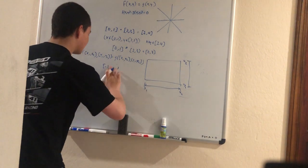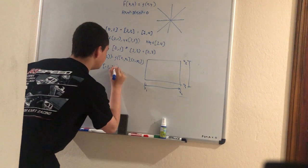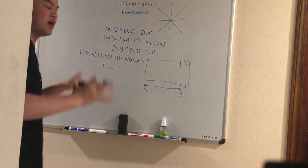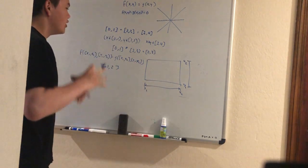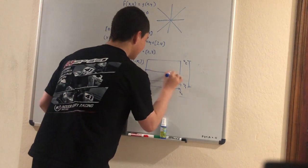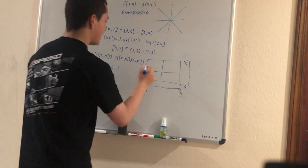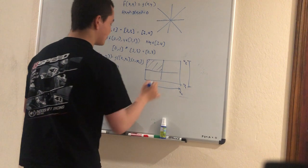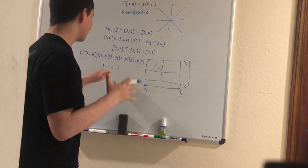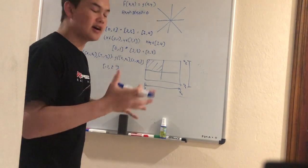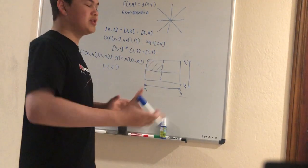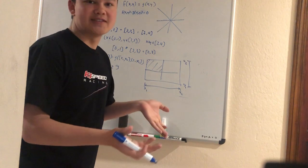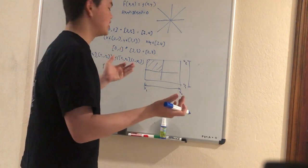But what if instead it returns something like [-1, 2]? 0 is in there, so it's possible there are some solutions to the equation in this rectangle. Well, we recurse. We divide it into 4, like so, and we repeat this process for every smaller rectangle. We discard any where the interval does not contain 0 and repeat. And eventually we get down to a pixel level, and then at that point we just say, hey, the function is there, or the equation is there.